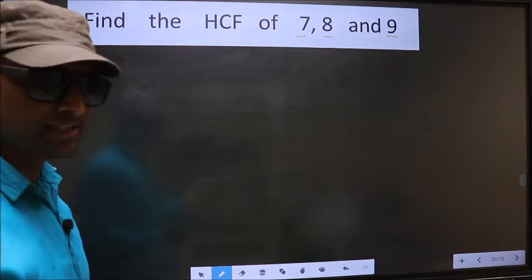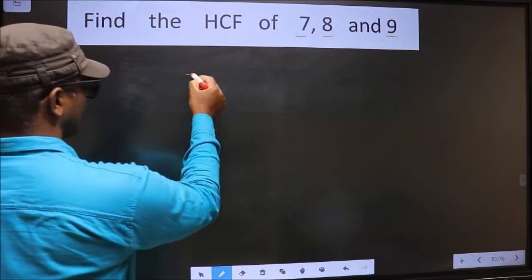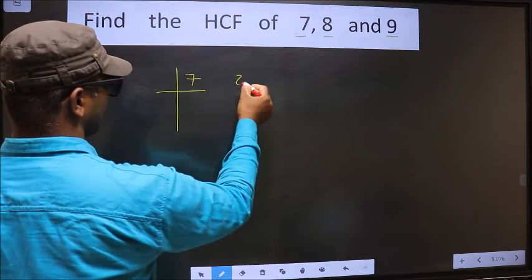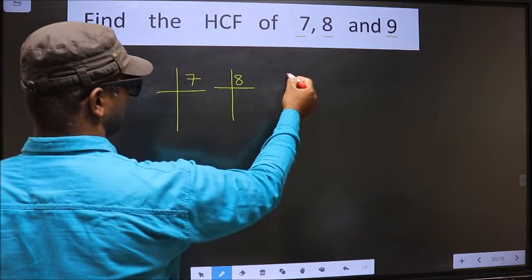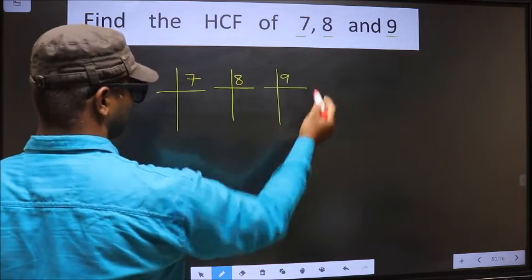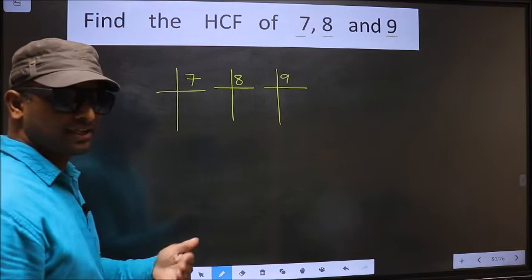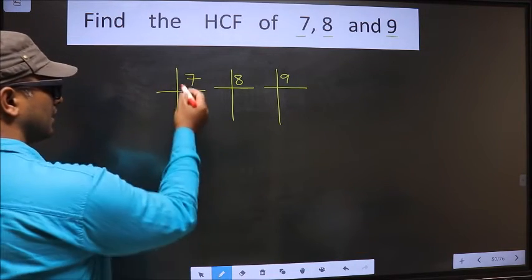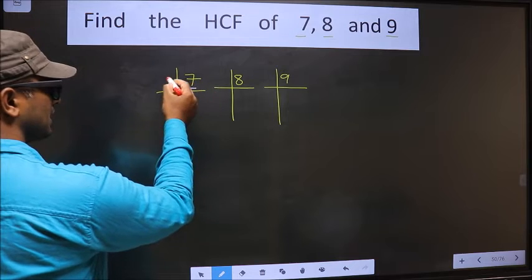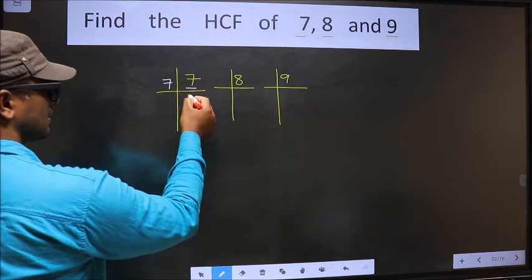That is: 7, 8, 9. Okay, next. Here we have 7. 7 is a prime number, so the prime factorization is just 7.